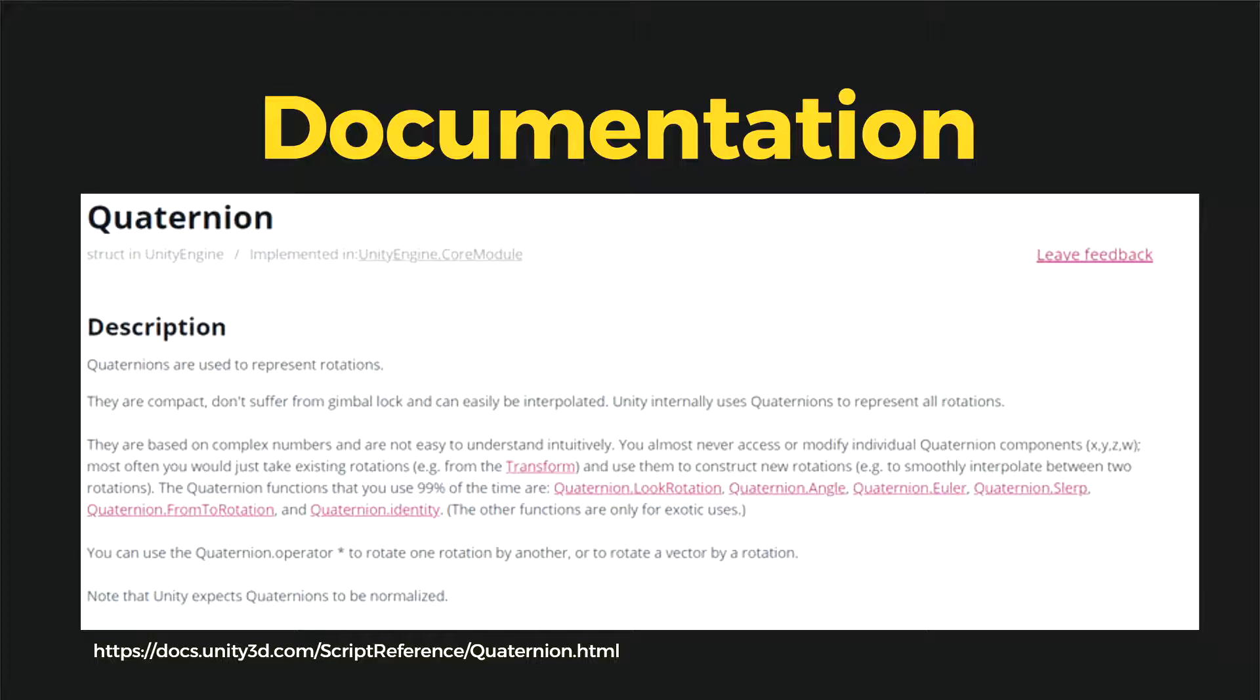But if we use Euler angles for this, there is something called gimbal lock. Basically, it causes a glitch where the object jumps from one rotation to another, not smoothly.